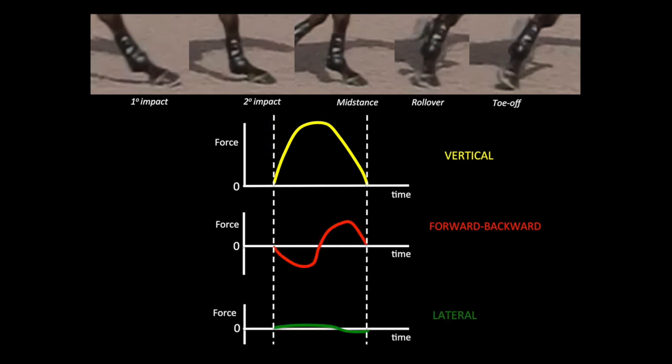Lastly, in the lateral or side-to-side direction, if traveling in a straight line, these forces are relatively small. But if the horse is turning, it will lean and push against the ground with its hooves to generate more lateral force so that it can turn. If a horse is going to turn left, it needs to push down and into the ground to the right. So, as you can see, the hooves are key to everything.